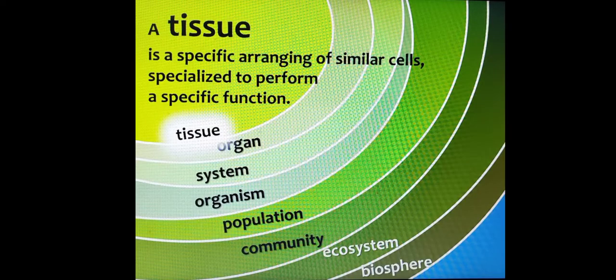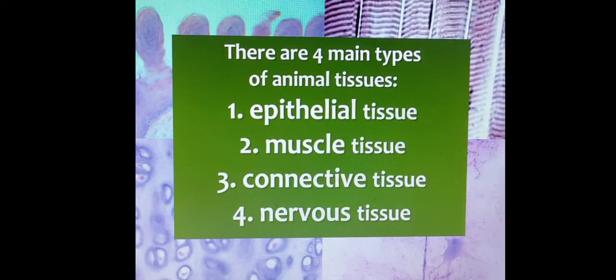A tissue is a specific arrangement of similar cells which performs a specific function. There are four major types of animal tissues: epithelial tissue, muscle tissue, connective tissue, and nervous tissue.